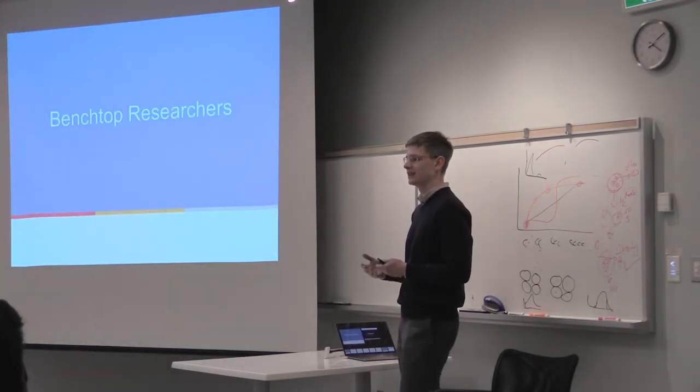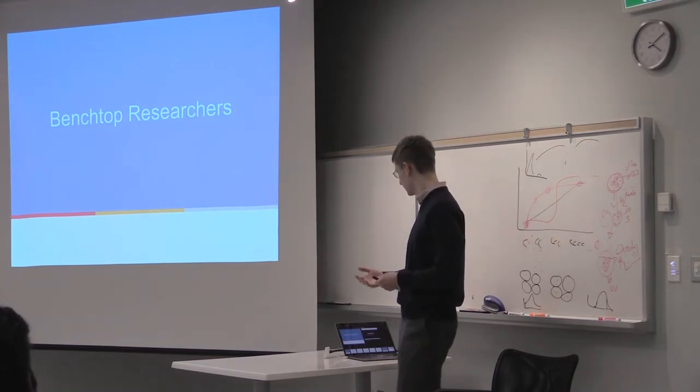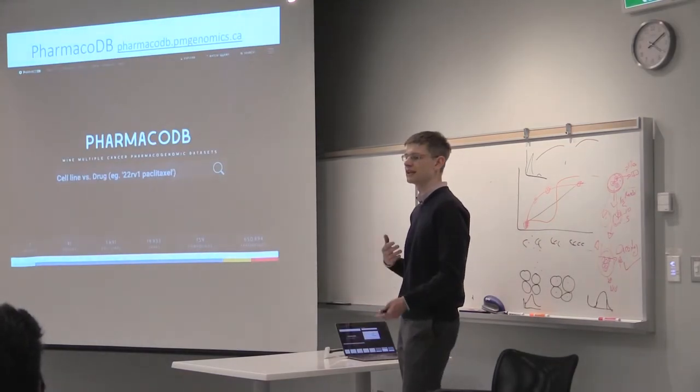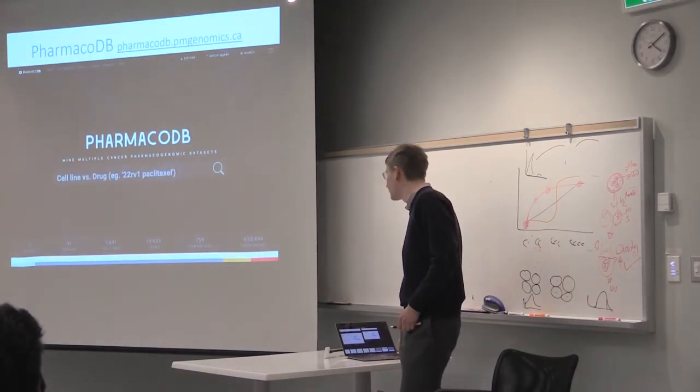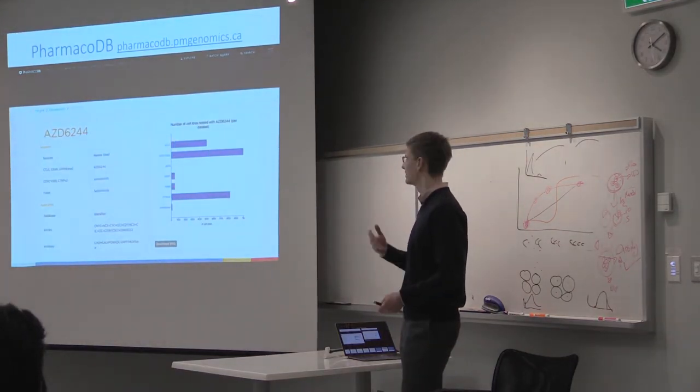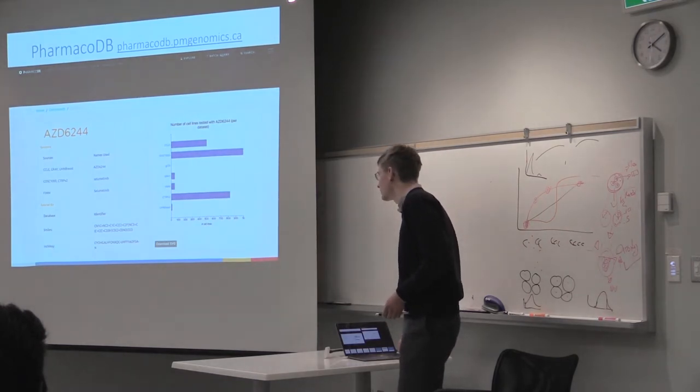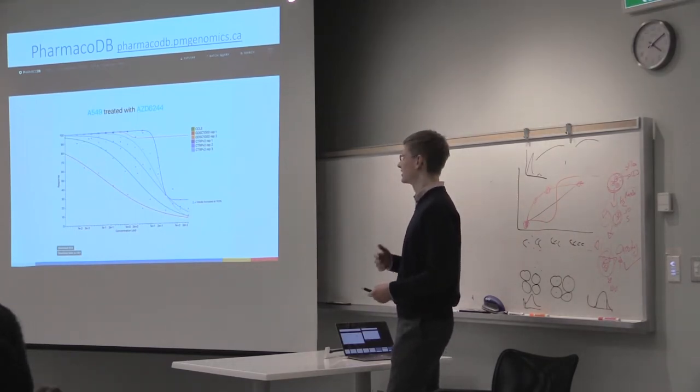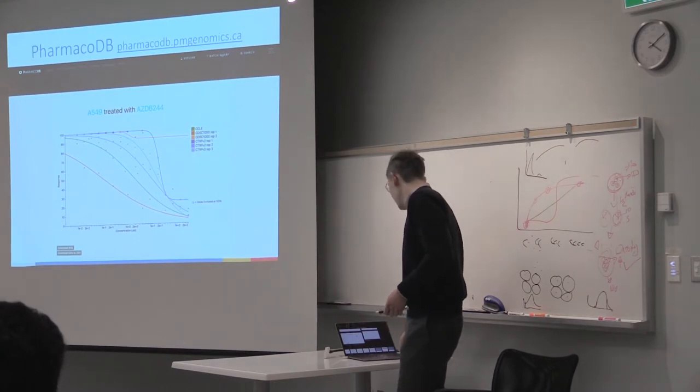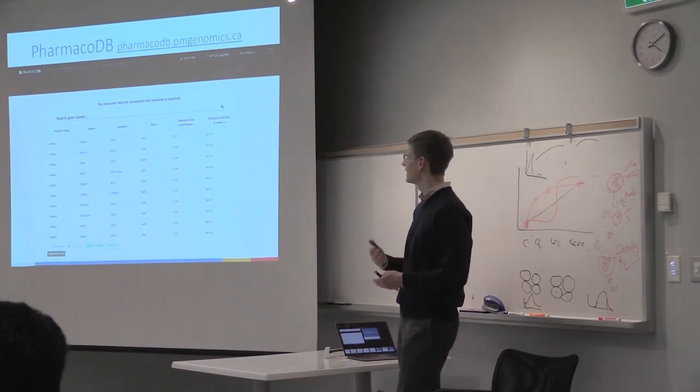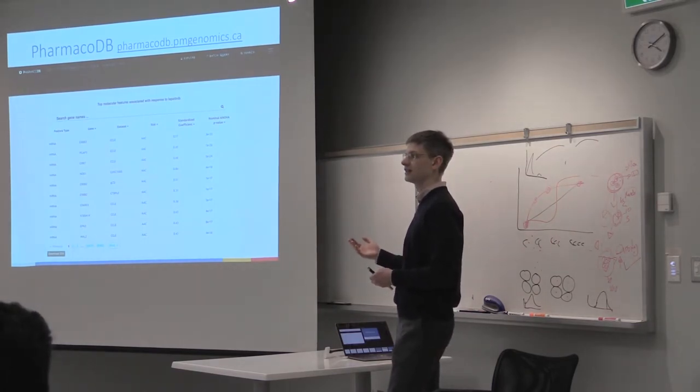While this is a good basis for computational biologists, for other people in the biomedical research field, we've created a web application where they can interactively search through all these studies, searching for their favorite cell lines and drugs, looking up summary statistics and the structure of these compounds. They can explore drug dose response curves, compare and contrast between different studies, and most importantly, search through different molecular features that our univariate pipeline predicted to be predictive of response to particular drugs.